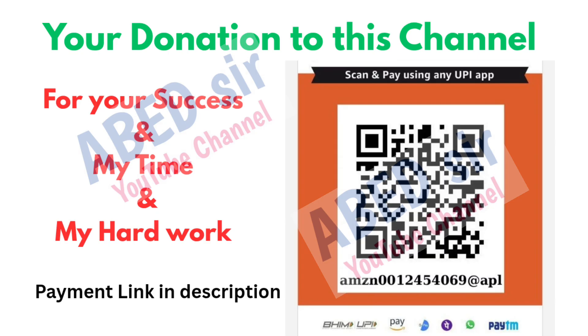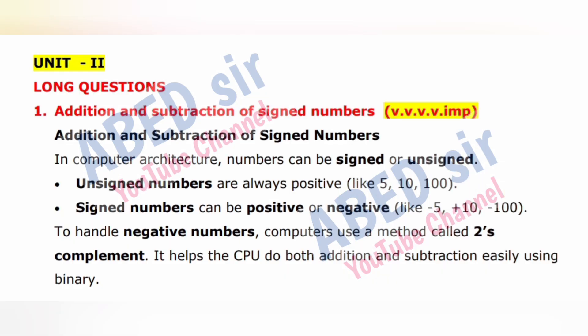Next, Unit 2 Long Questions. First important long question: Addition and subtraction of signed numbers. In computer architecture, numbers can be signed or unsigned. Unsigned numbers are always positive, like 5, 10, 100. Signed numbers can be positive or negative, like minus 5, plus 10, minus 100. To handle negative numbers, computers use a method called 2's complement, which helps the CPU do both addition and subtraction easily using binary.